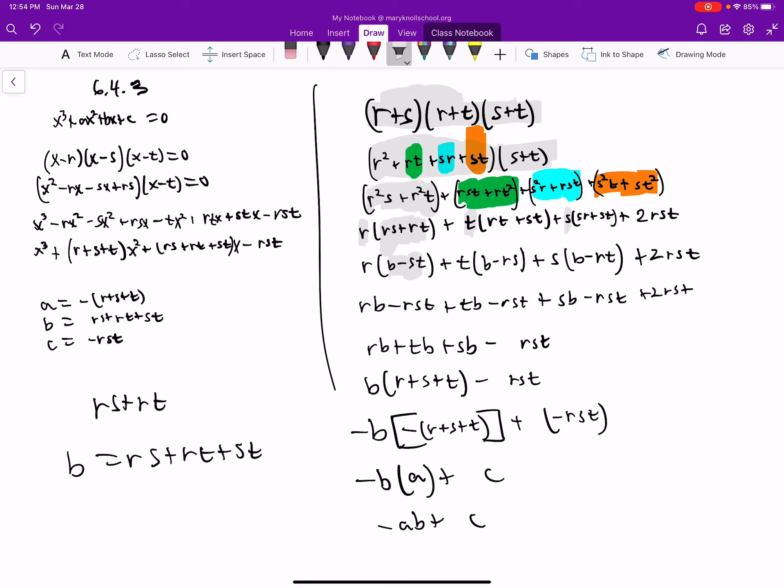We want r*s and r*t, so b minus s*t equals r*s plus r*t.